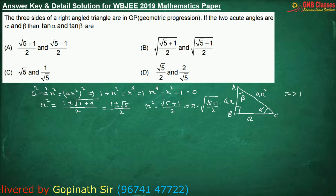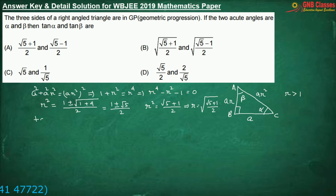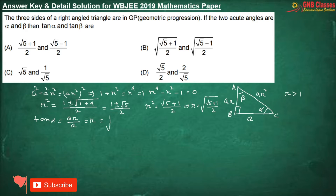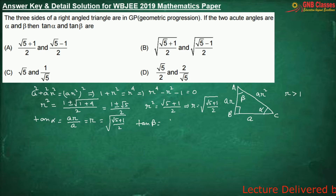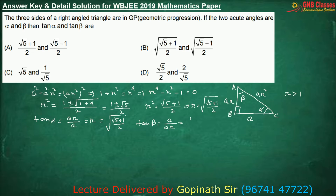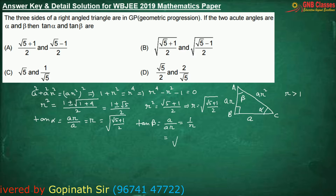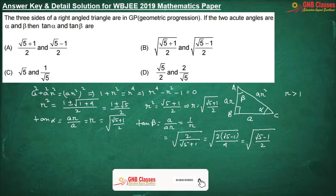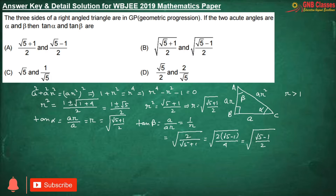Now, tan alpha is basically ar divided by a, which gives you only r — that is, the square root of (root 5 plus 1) divided by 2. And tan beta will be a divided by ar, giving 1 by r, which equals the square root of 2 divided by (root 5 plus 1). Rationalizing this, we get the square root of (root 5 minus 1) divided by 2. Therefore, option B is correct in this problem.